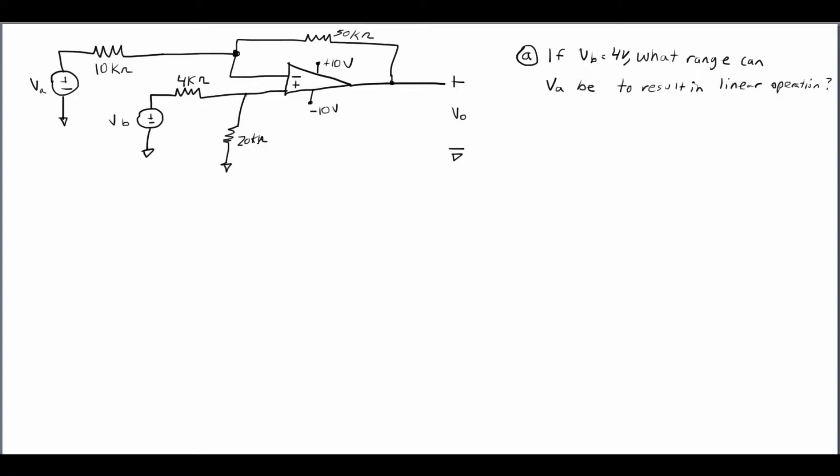Hey guys, what's going on? It's Will here bringing you another Engineering Made Easy video. This time we're going to talk about the difference op amp. In a nutshell, the difference op amp is used to basically subtract two analog signals from each other. This is very useful for analog circuitry, so let's dive right in.